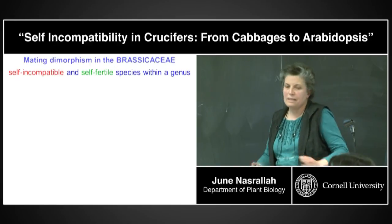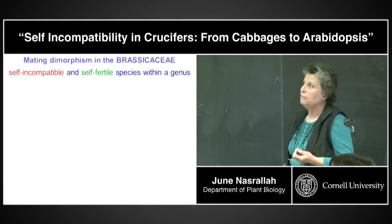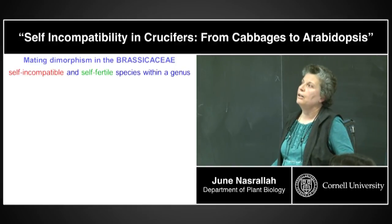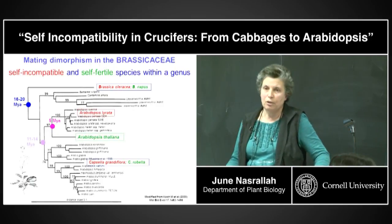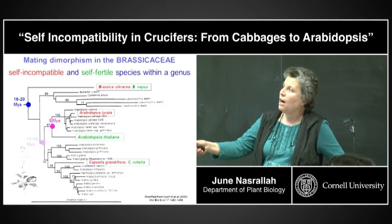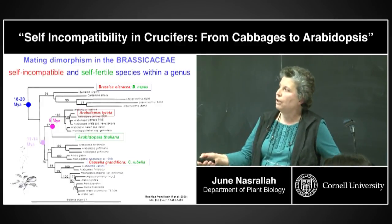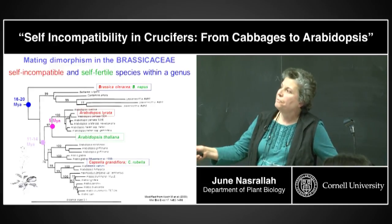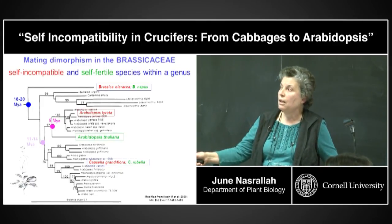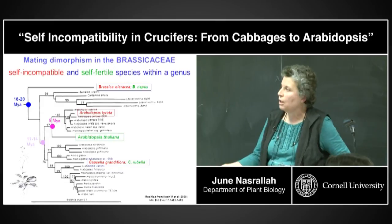There are many plants within the Brassicaceae that are self-fertile. Within this family you can have self-incompatible and self-fertile plants. For example, Brassica oleracea is self-incompatible and Brassica napus is typically self-compatible. In the genus Arabidopsis, most species are self-incompatible — for example, Arabidopsis lyrata — but Arabidopsis thaliana is highly self-fertile, which is why it's such a good model for genetics.